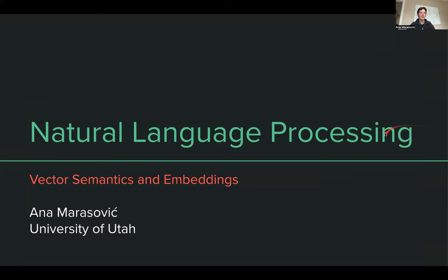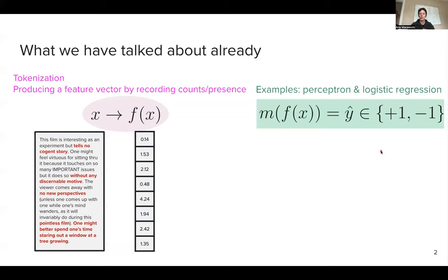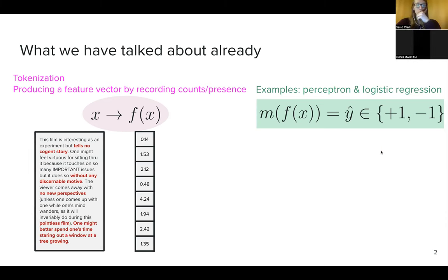Let's get started with our new topic. Just a brief reminder of what we have been talking about so far. In all of the lectures, we have had two components of our modeling: a first step of producing some kind of representation of our text, which involves splitting text into smaller units. Last time we heard that having subwords is going to be the most useful for us, and then we produce some kind of representation out of it.